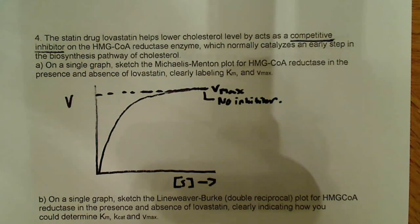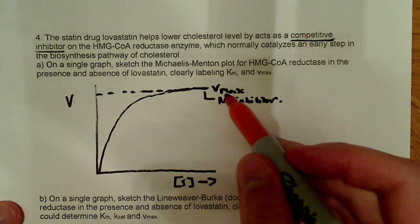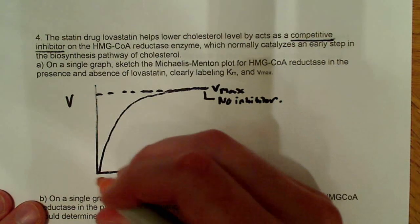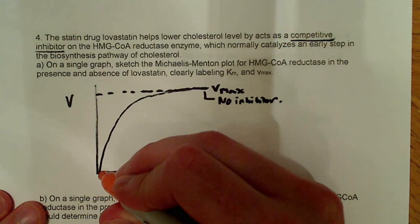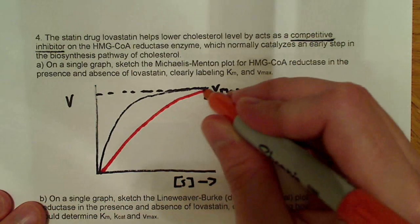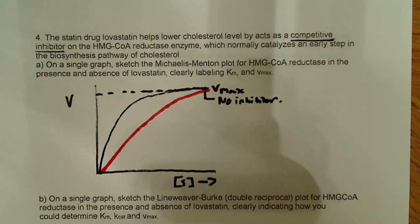Now, if we add this competitive inhibitor, we know, we know one thing, we know it's eventually going to reach this Vmax here. But, it's going to just essentially be flattened out a little more, approaching that spot. So, it'll maybe look something like that. Eventually, it's going to reach the same position. Eventually, it's going to get to the same spot.